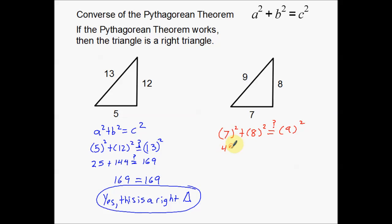Well, 49 plus 64, is that going to be equal to, if I add those together, is that going to be equal to 81? Well right off the bat, we can see 40 plus 60 is 100, and then 9 plus 4 is 13. So this is 113, which is definitely not equal to 81.